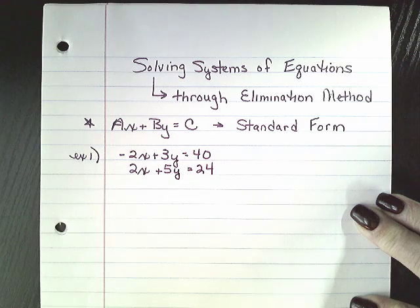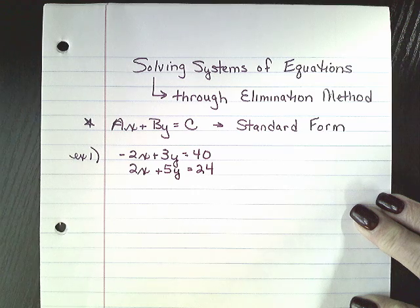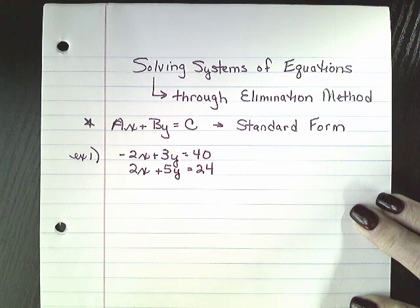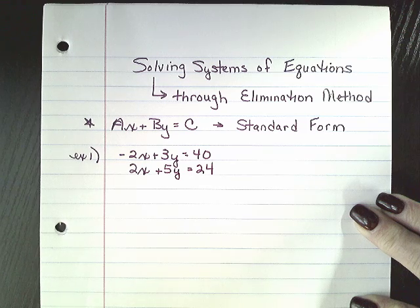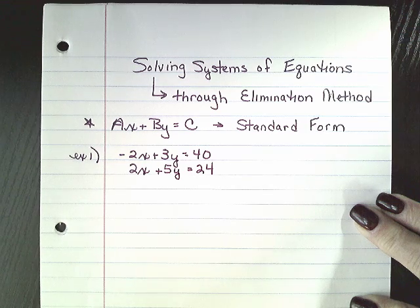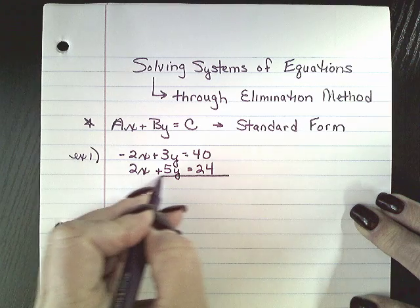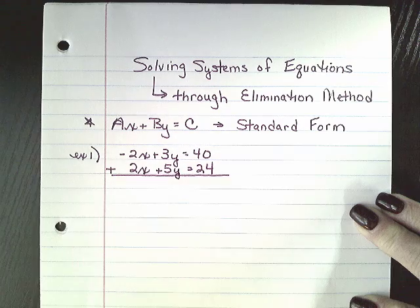Now we're going to treat this as an addition problem. So when you add a negative and a positive that have the same variable, same value but opposite signs, you know that you can cancel those out. So the first thing we're going to do is draw a line and put a plus sign. We're treating this as an addition problem.